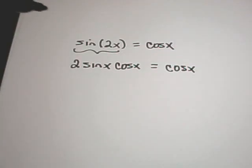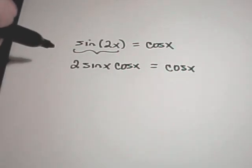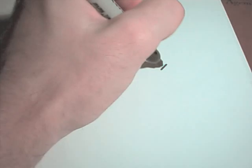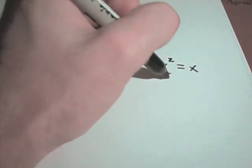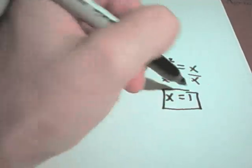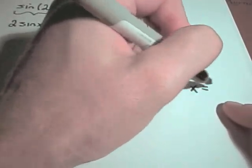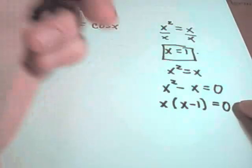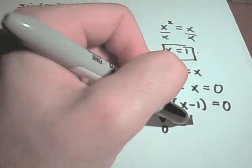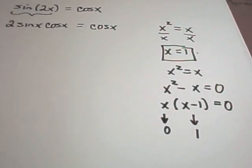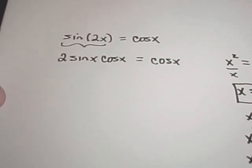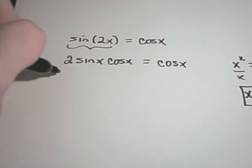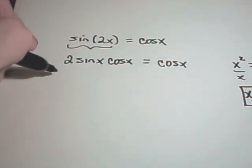You have to be careful here. A lot of people will want to divide both sides by cos(x), which is not correct — you end up losing solutions. It's equivalent to solving x² = x by dividing both sides by x: you'd only get x = 1 and miss x = 0. Instead, you need to set the equation equal to 0 and factor. Dividing by cos(x) would lose solutions the same way.